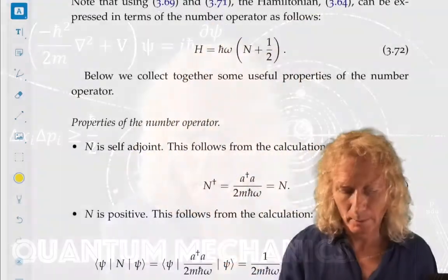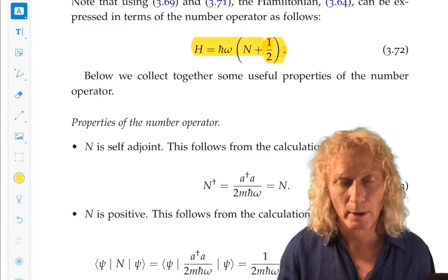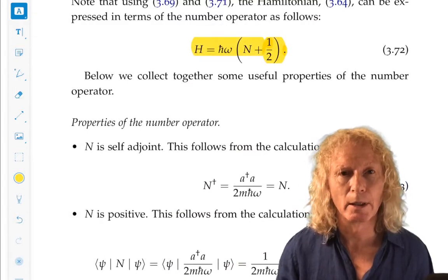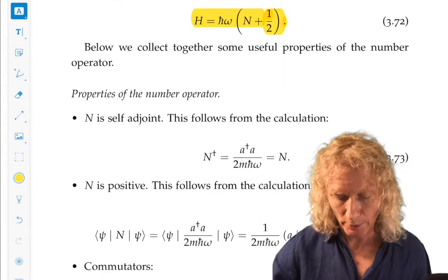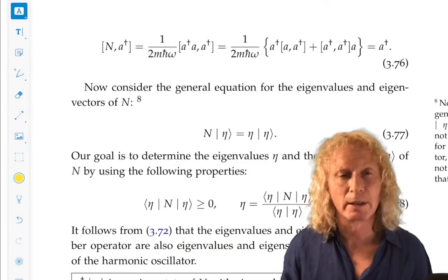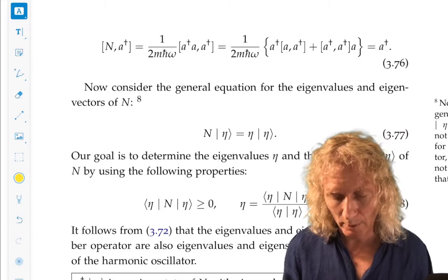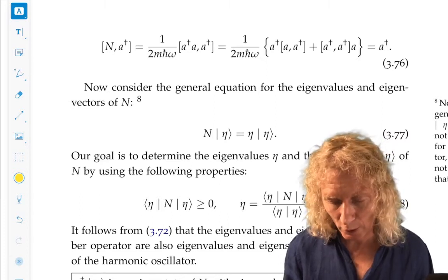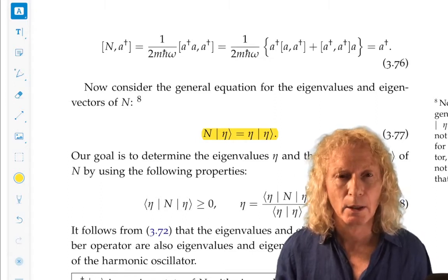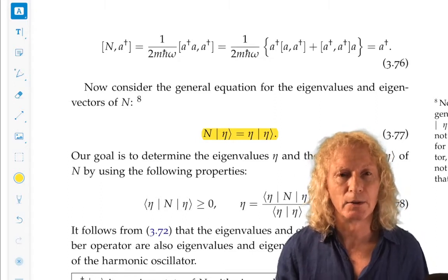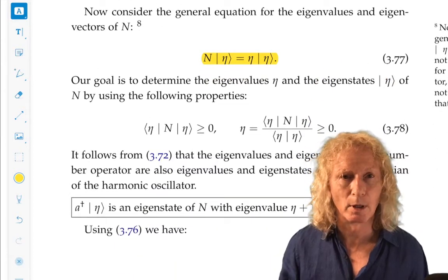Remember last time we expressed the Hamiltonian for the harmonic oscillator as h-bar omega times the quantity number operator plus a half. So we're concerned with the number operator, finding the eigenvalues and eigenstates or eigenvectors of the number operator. If we denote the eigenvalues by eta, we denote the corresponding eigenstate by ket eta, and this is the eigenvalue equation for the number operator.